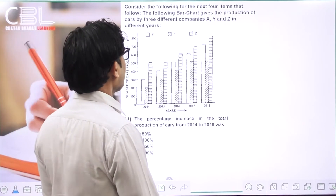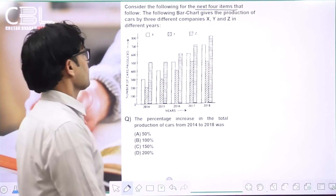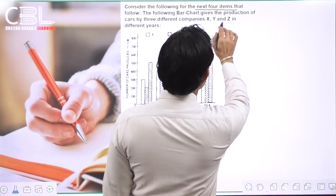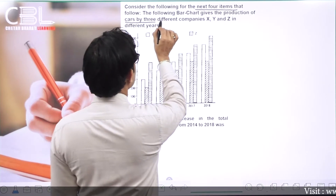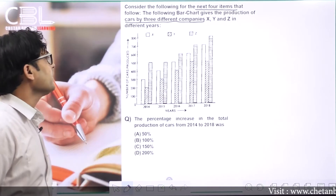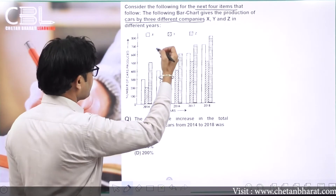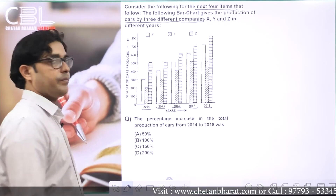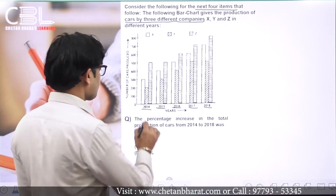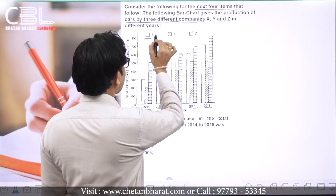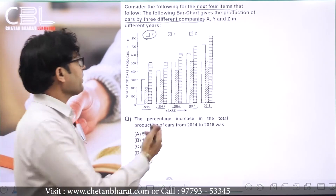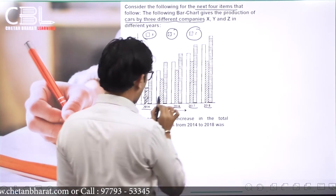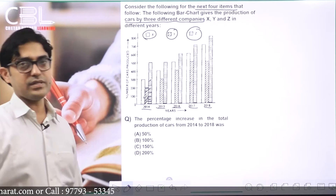Next: Consider the following for the next four questions. The following bar chart gives the production of cars by three different companies X, Y and Z in different years: 2014, 2015, 2016, 2017 and 2018। White bar X company को represent करता है, middle bar Y company को, और horizontal lines वाला bar Z company को represent करता है।